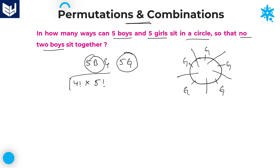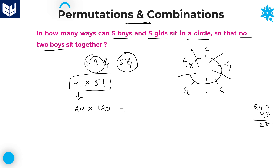Therefore the required answer is 4 factorial into 5 factorial. As we know, 4 factorial equals 24 and 5 factorial equals 120. Multiplying these two gives 2880.